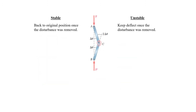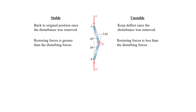Let's look at the stable and unstable states of the column. For the stable state, the column will return to the original position once the force is removed. However, for the unstable state, the column will keep deflecting once the force is removed. Comparing the restoring forces: for the stable state, the restoring force is greater than the applied force, and for the unstable state, the restoring force is less than the disturbing force.